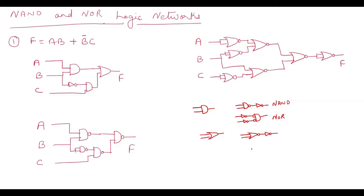If we want to replace an OR gate with a NAND structure, we place inverters at each of the two inputs and two bubbles, making it a NAND gate. To neutralize those bubbles, we put inverters at the inputs. So the AND gate can be replaced with NAND and NOR, and the OR gate can be replaced with NOR and NAND structures.